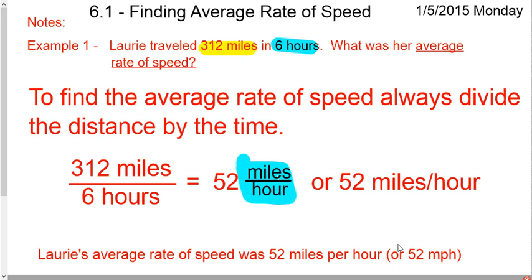The real thing that it's trying to say is that every hour, on average, Lori was able to travel 52 miles. So that's how you find the average speed.